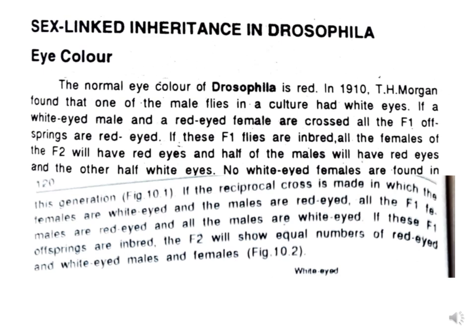Let us take the example of sex-linked inheritance in Drosophila — eye color. The normal eye color of Drosophila is red. T. H. Morgan in 1910 found one white-eyed male fly in a Drosophila culture. When these white-eyed males were bred with red-eyed females, all the F1 offspring were red-eyed.